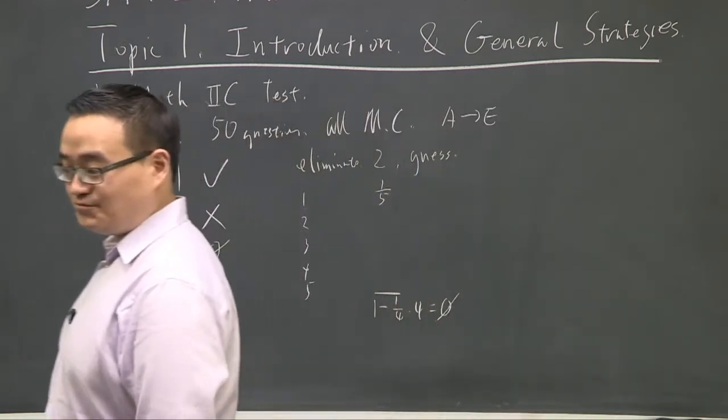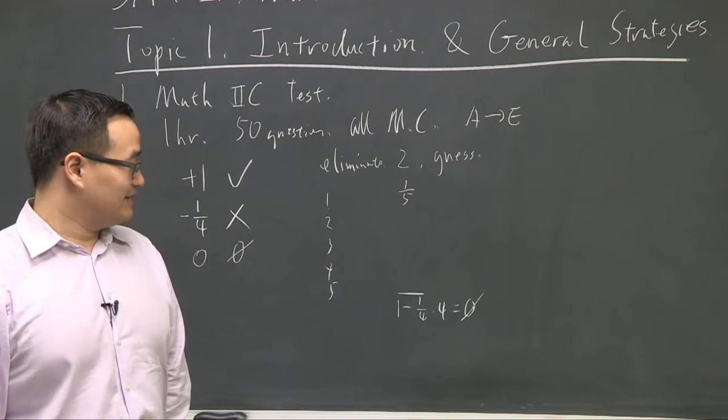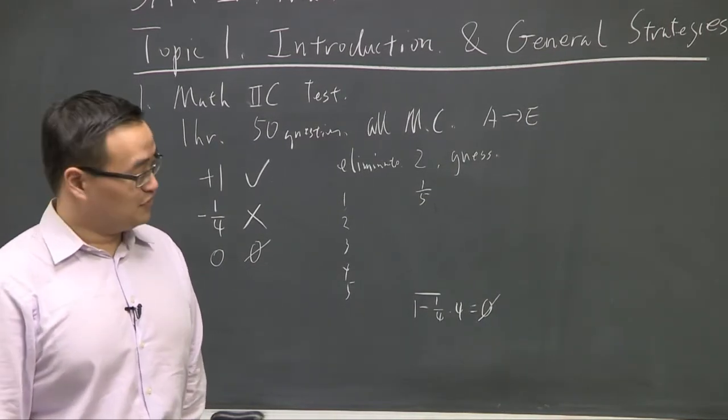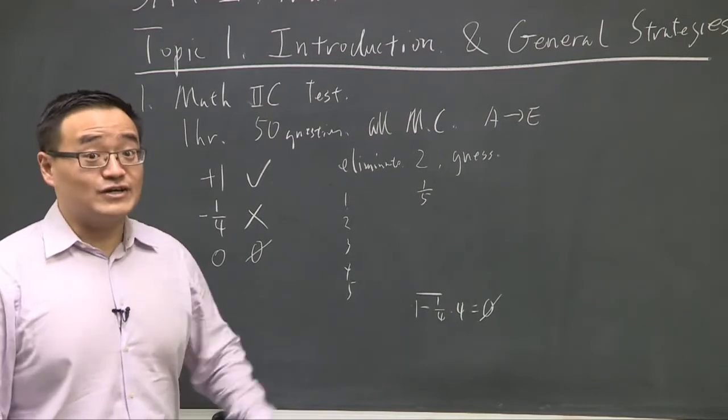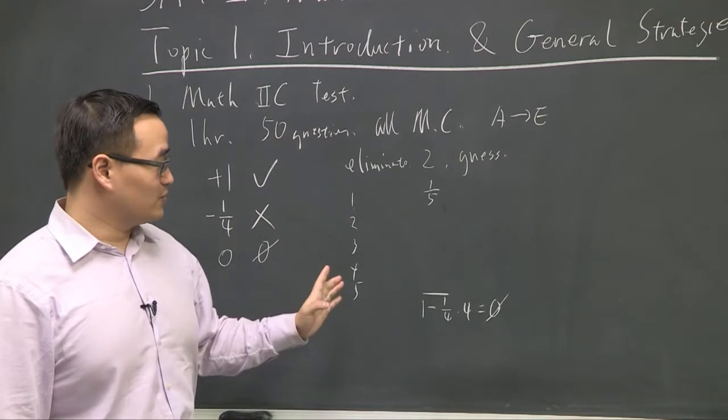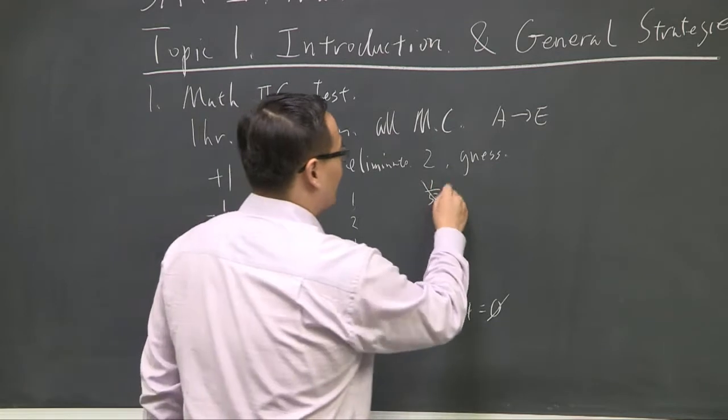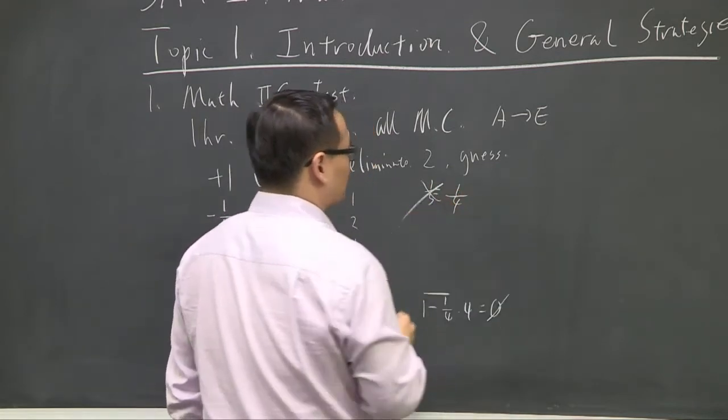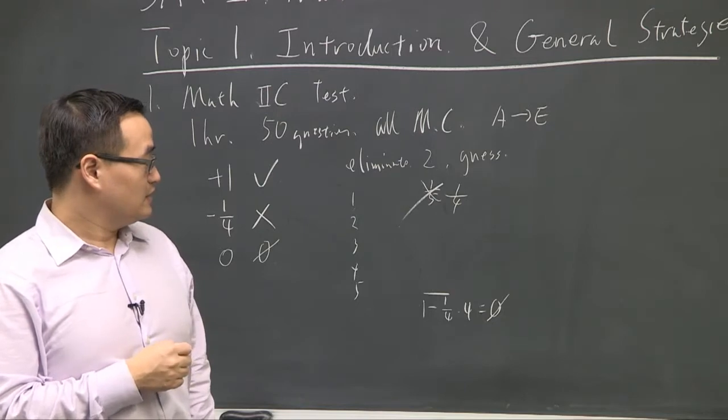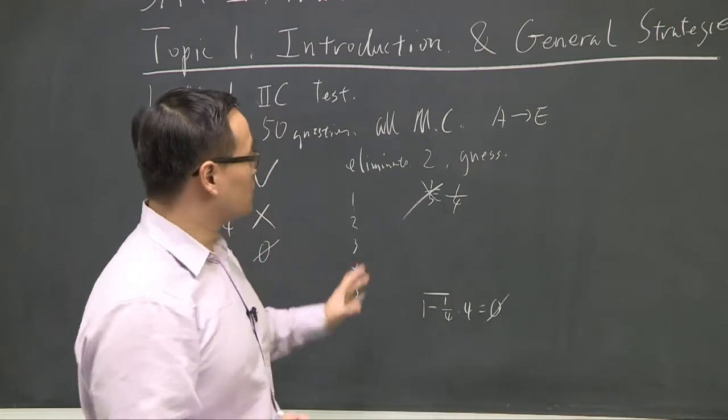So completely, if you say, well, that's kind of not worth it, right? That's why they try to discourage you from guessing randomly, because if you guess the entire test, you're going to end up with zero points. Raw score. We're only talking about raw score here. But as you can see, if you can eliminate one, right, then your odds are no longer one-fifth, you become one-fourth, right? And then you can do the math, you're going to end up with a net score that's positive.